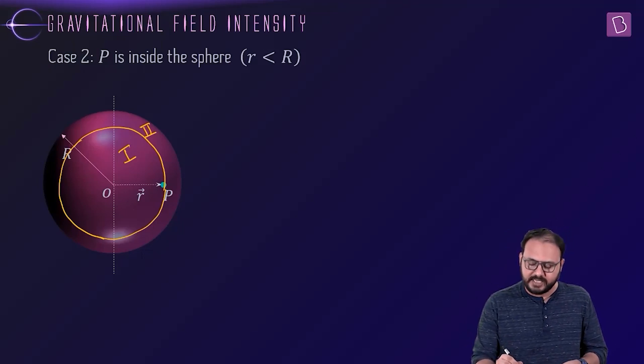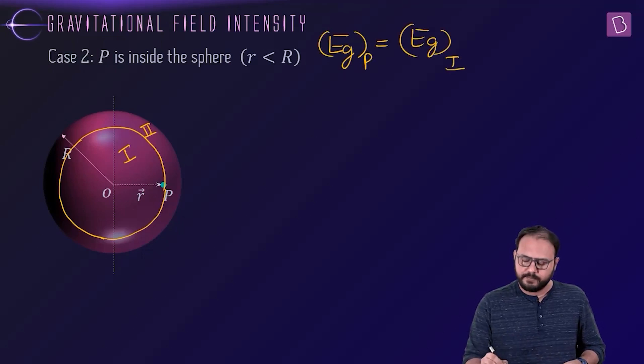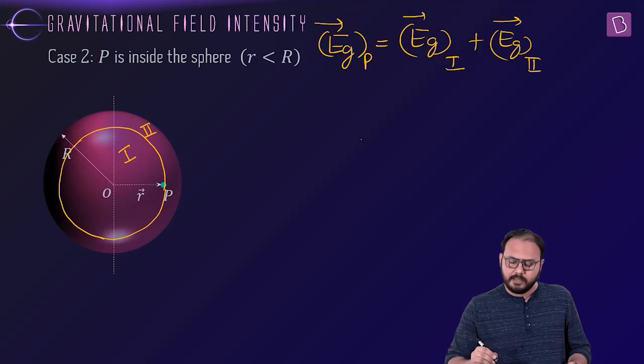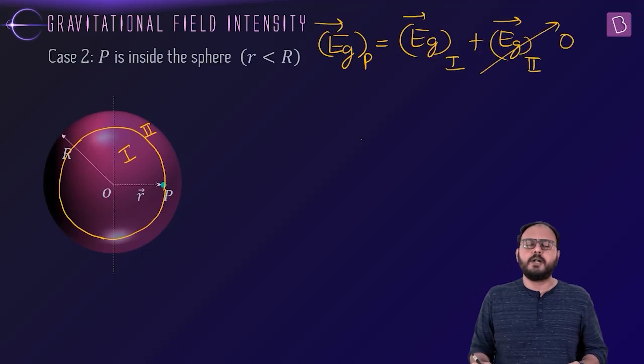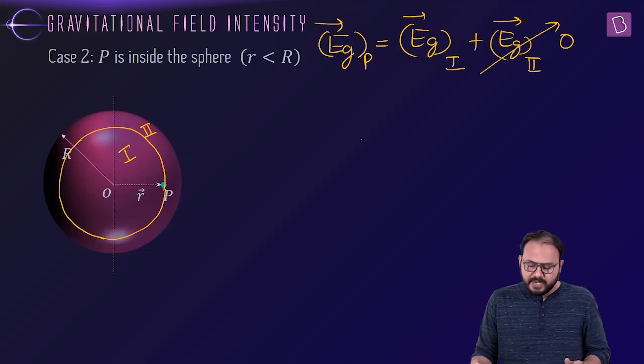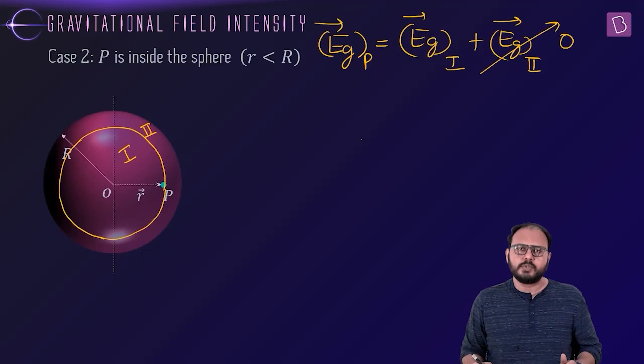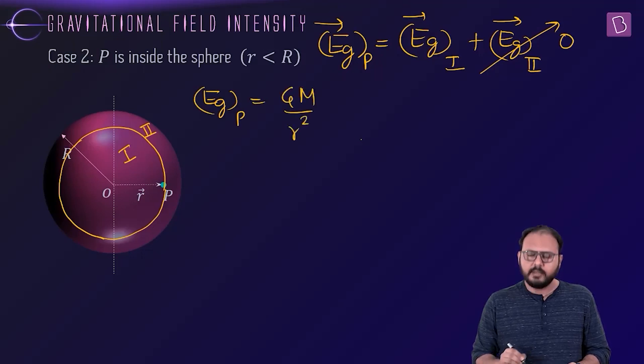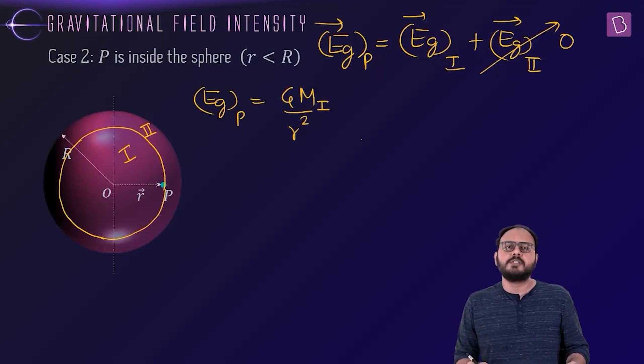Total gravitational field at point P is due to gravitational field of the first part and the second part. Put a vector sign. The contribution from part two is zero. And as far as part one is concerned, it's on the boundary. Eg P will be g m by r square. Whose m? Not the total m. M of only the first part.